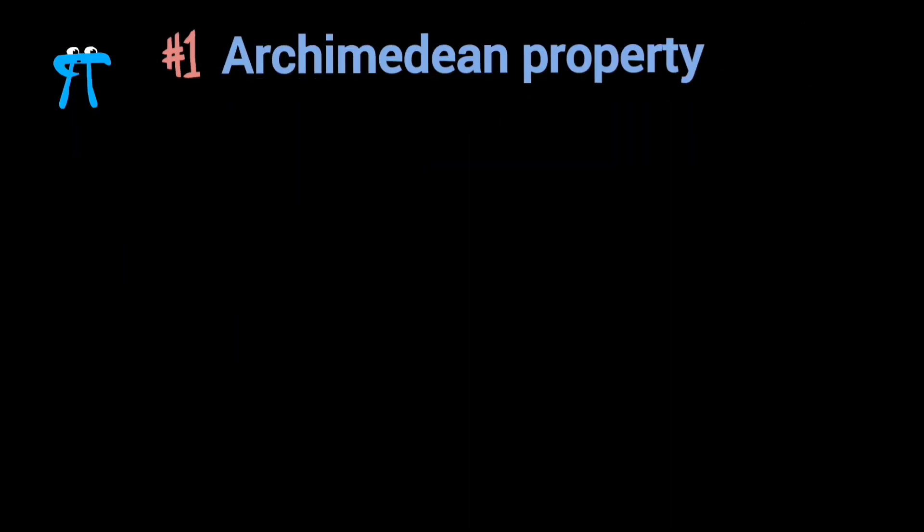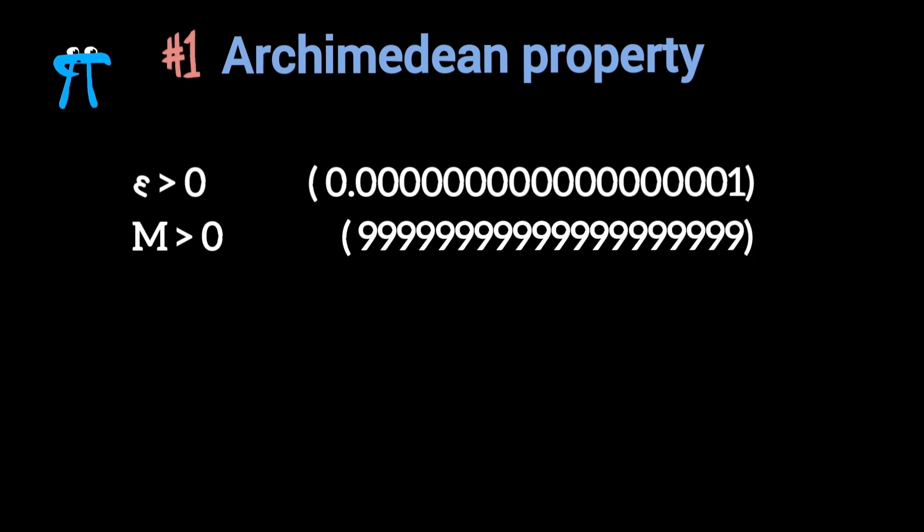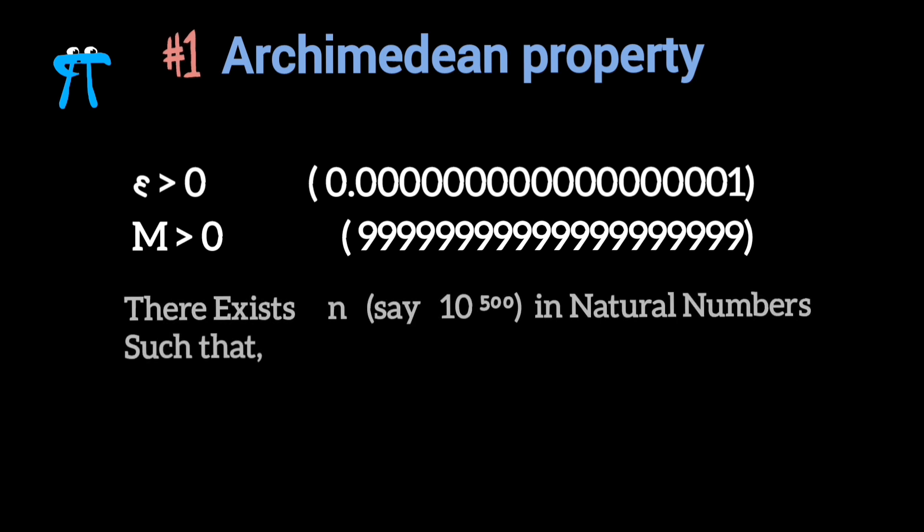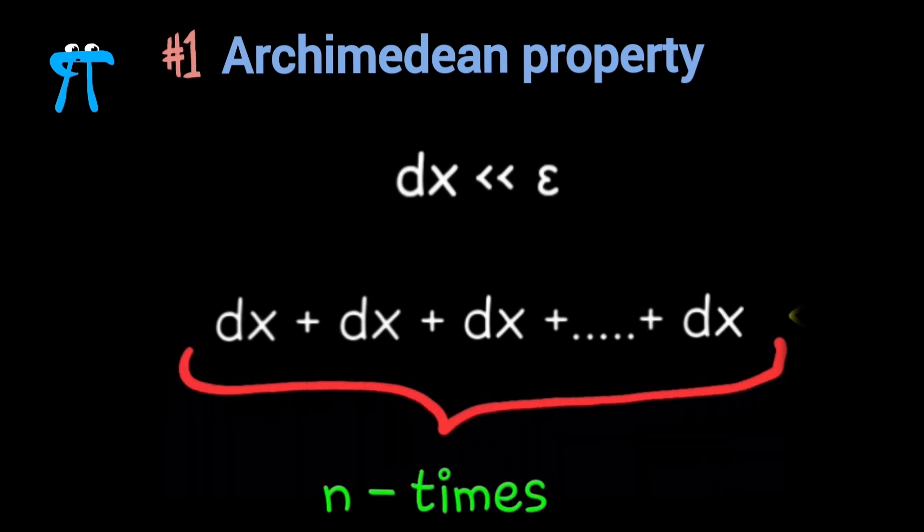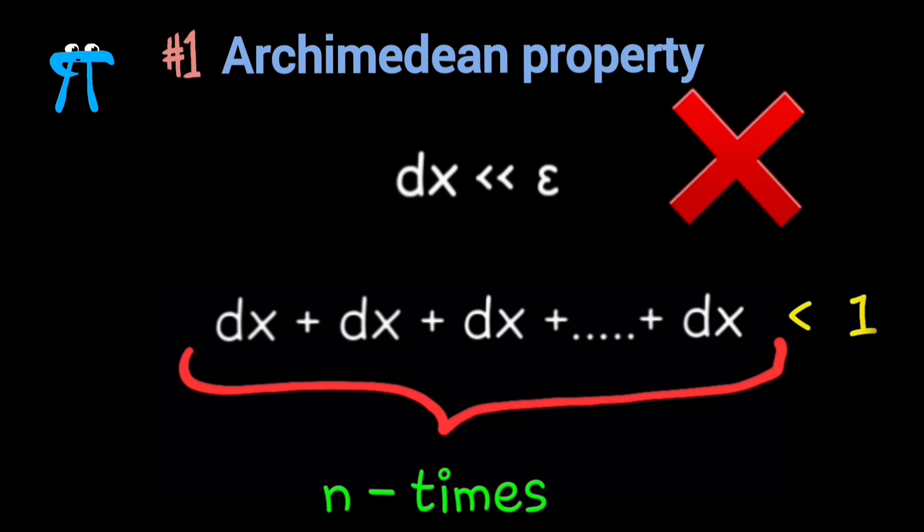Which says that given any positive real number, say epsilon, no matter how small, and given any positive real number m, no matter how big, there always exists a natural number n, such that n times epsilon is greater than m. But an infinitesimal is supposed to be so small, that no matter how many times you add up it to itself, it never gets to 1, which contradicts the Archimedean property.